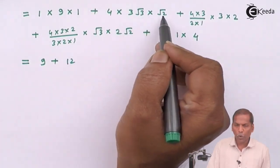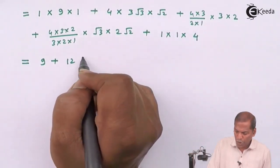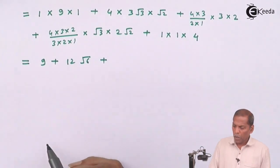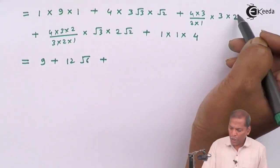Plus now 4 into 3, 12, and root 3 into root 2 so that gives root 6.